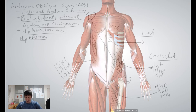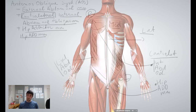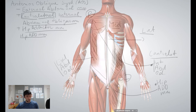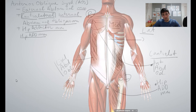A healthy anterior oblique system is our first defense against lumbar spine extension injuries. I would recommend, for example in Pilates, the dead bug exercise — that should be the first one we try. Are you familiar with the dead bug? Let me try to draw that.